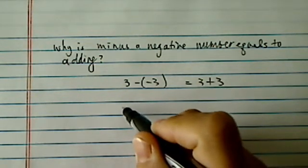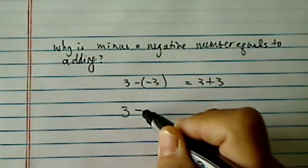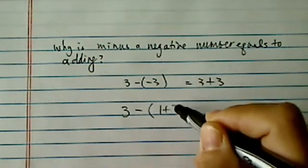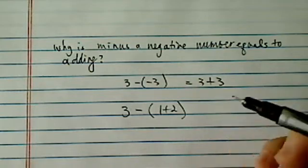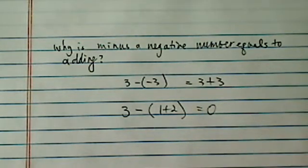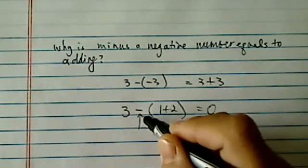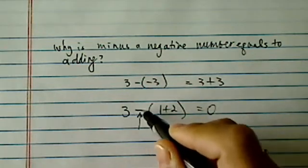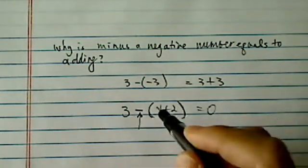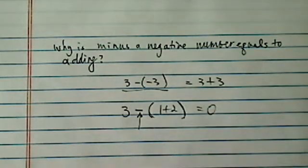Let's take a look at another example. If I have 3 minus (1 plus 2), you know it's 3 minus 3. This answer should be equal to 0. And the reason I wanted to use this example is to show you what happens with a negative sign with the parentheses. And that, in turn, will explain why minus minus is a positive.